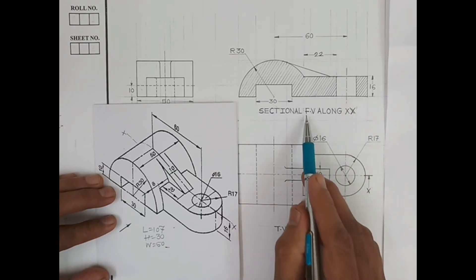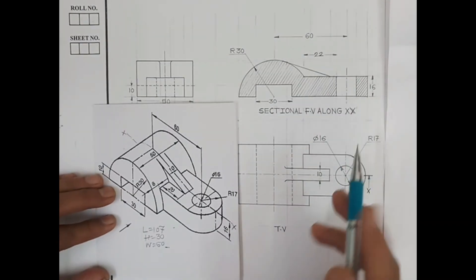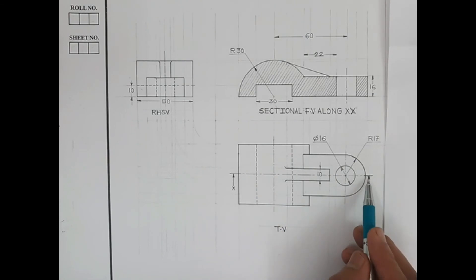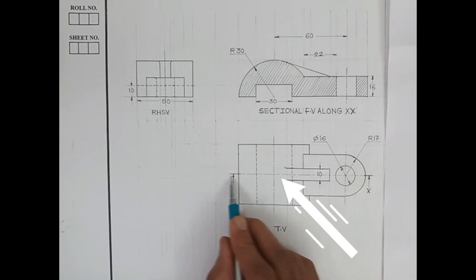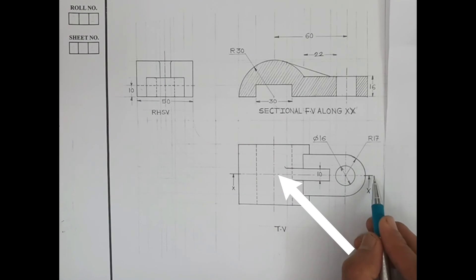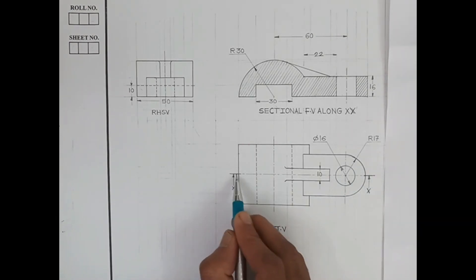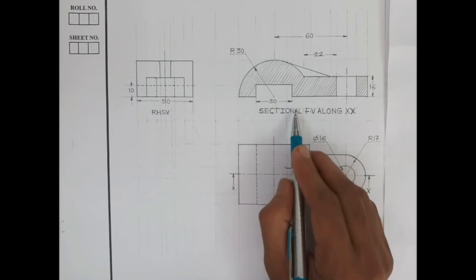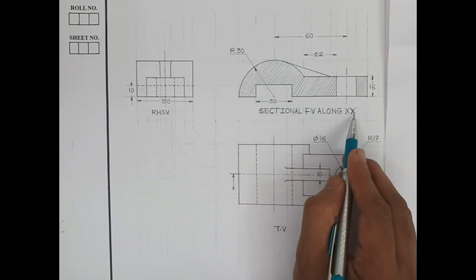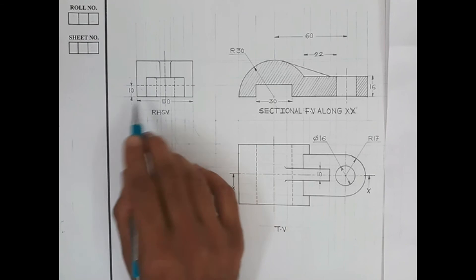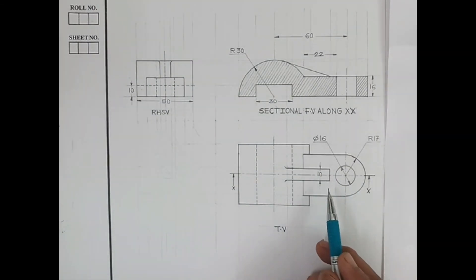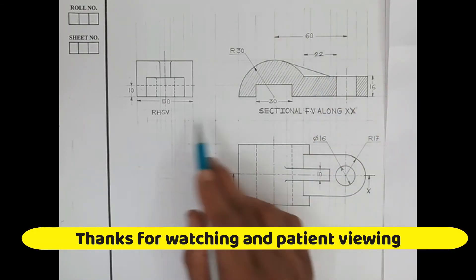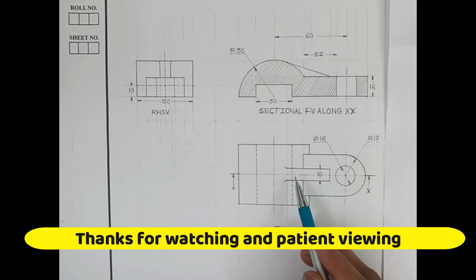The last step is to name the views and dimension them. This is the sectional front view along XX. Whenever it is a sectional view, we show the cutting plane convention: a center line with thick end dashes, named XX. Then label the right-hand side view. Dimensioning is done using either the aligned or unidirectional method — here the unidirectional method is used. Thanks for watching and for your patient viewing.